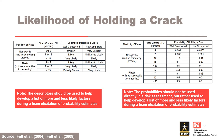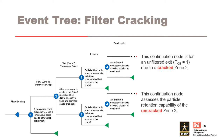This slide provides suggested guidance for assessing the likelihood of holding a crack based on fines content and cementation. The descriptors and probabilities should be used to help develop a list of more and less likely factors during a team elicitation of probability estimates. Event tree for filter cracking: this slide illustrates how the generic event tree can be adapted if filter cracking is a concern. In this example, a node was added to assess the likelihood of common cause cracking in zone 2 or pervious shell due to excessive fines. If zone 2 is cracked, an unfiltered exit exists in the next node. Otherwise, the continuation node assesses the particle retention capability in the uncracked zone 2, the pervious shell.